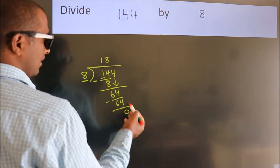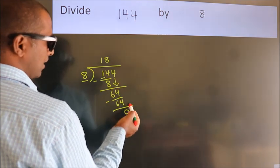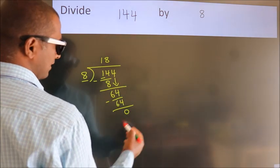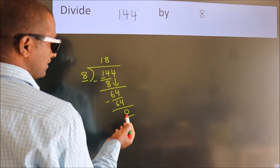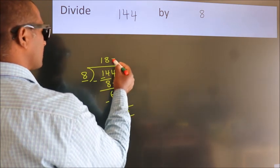After this, no more numbers to bring down, and we got remainder 0. So this is our quotient.